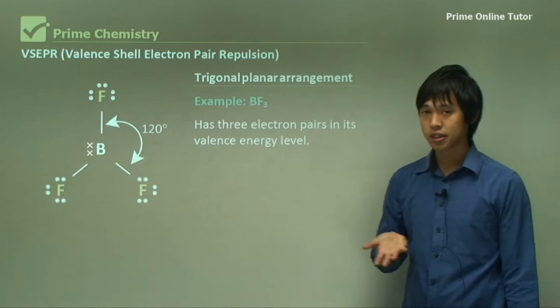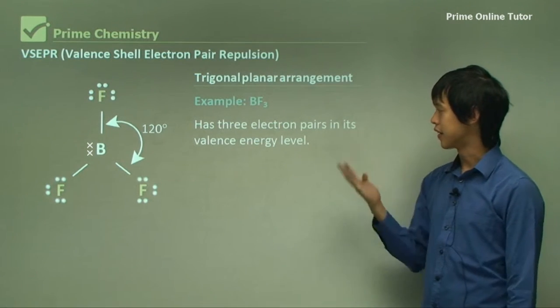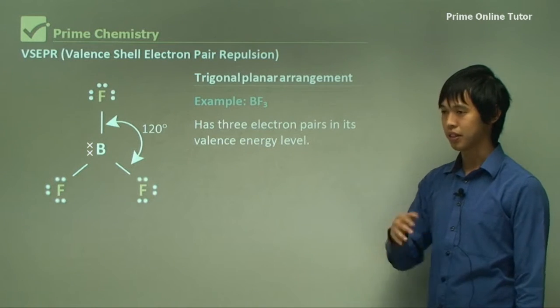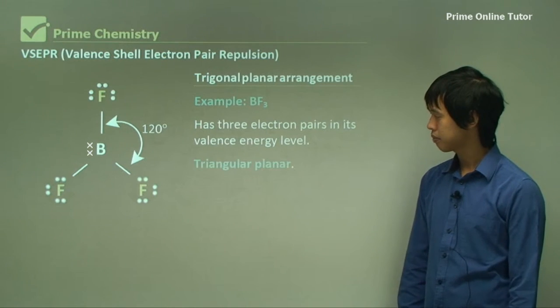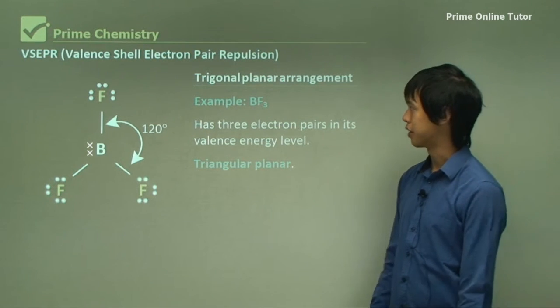Boron has that extra lone pair, which actually would sit kind of on top, which forces them all to sit in the same plane. So again, as I mentioned, the boron trifluorine is our example. It has three electron pairs in its valence energy level, so in the valence shell. And so we get a triangular planar shape, or trigonal planar shape.